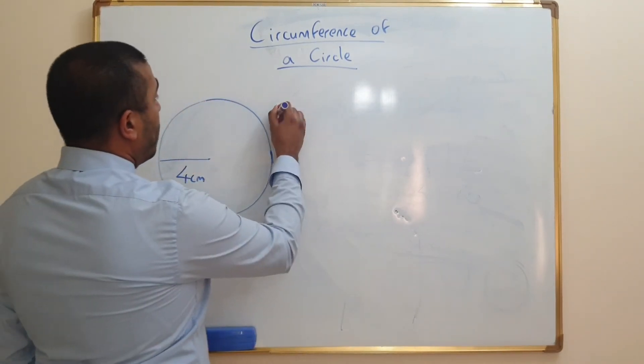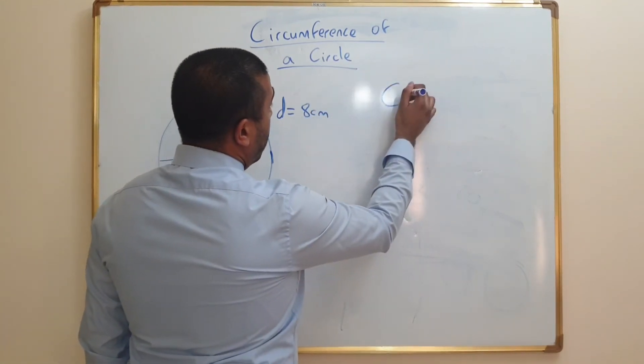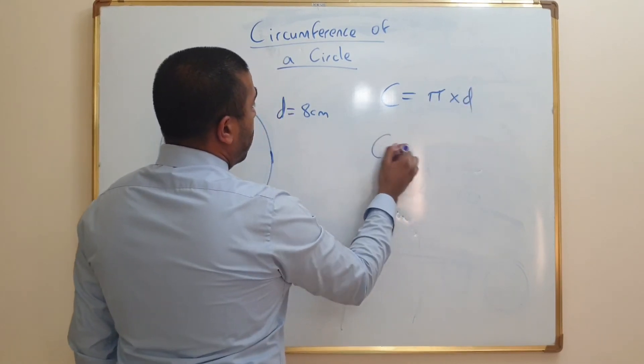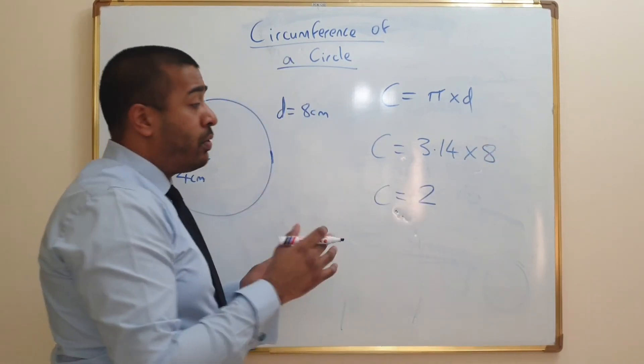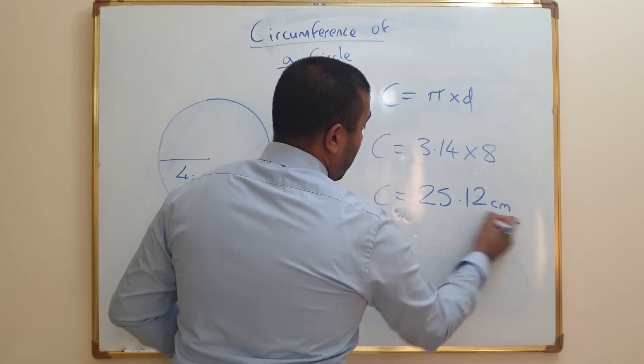The diameter is going to be 8 centimeters. Then we can plug that into the formula. Circumference equals pi times diameter. Circumference equals 3.14 times 8. So the circumference equals 25.12 centimeters.